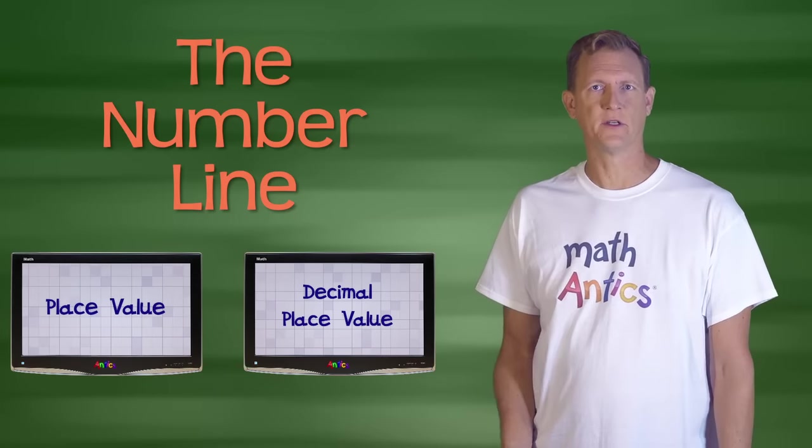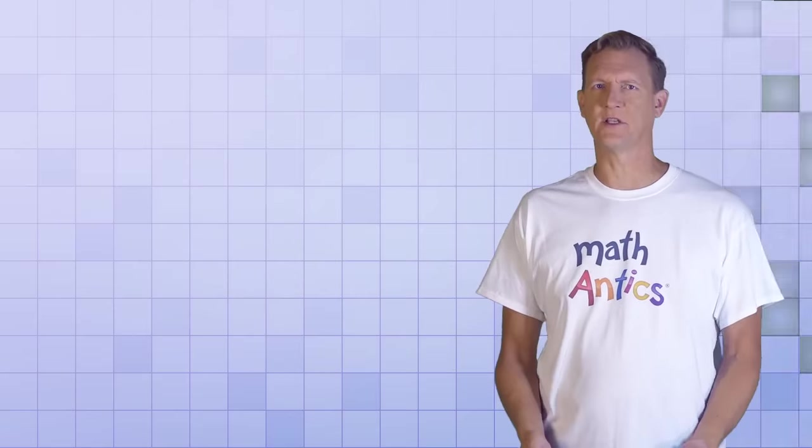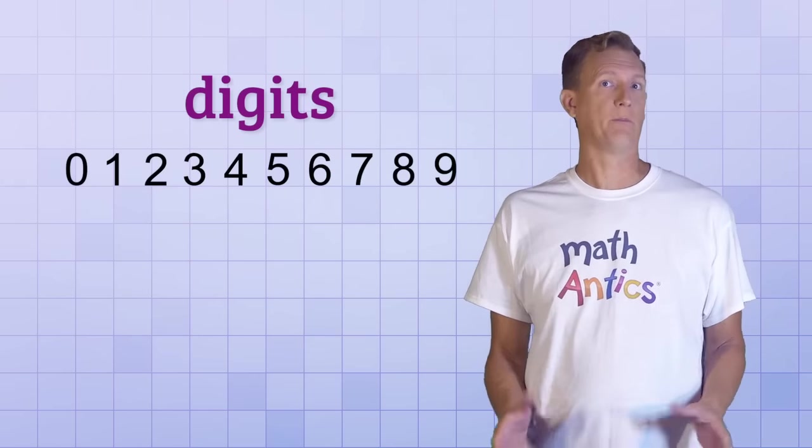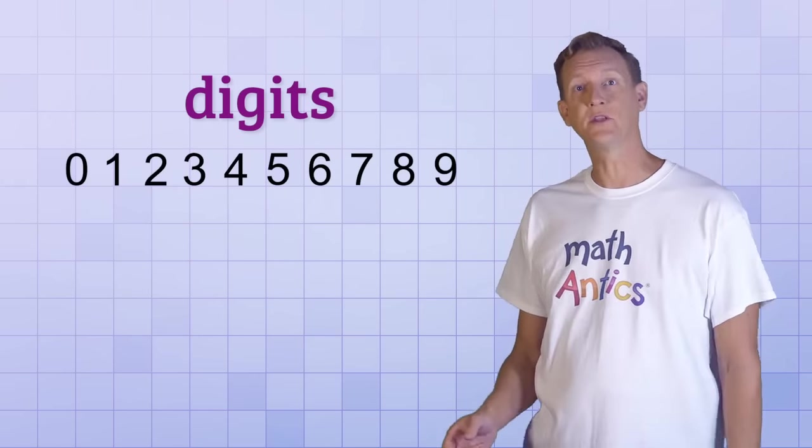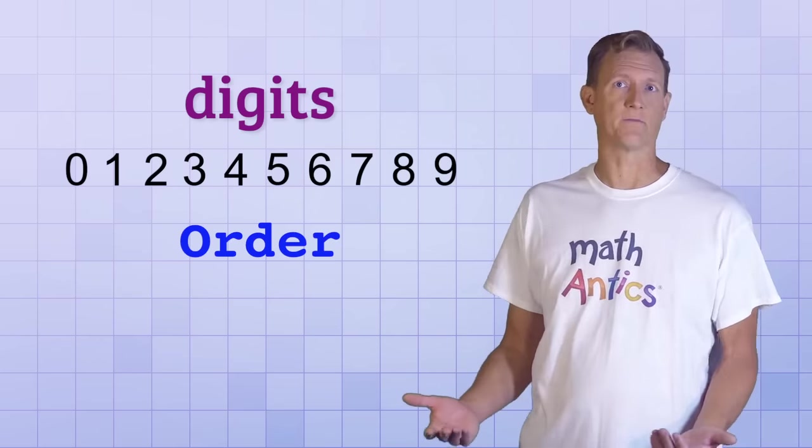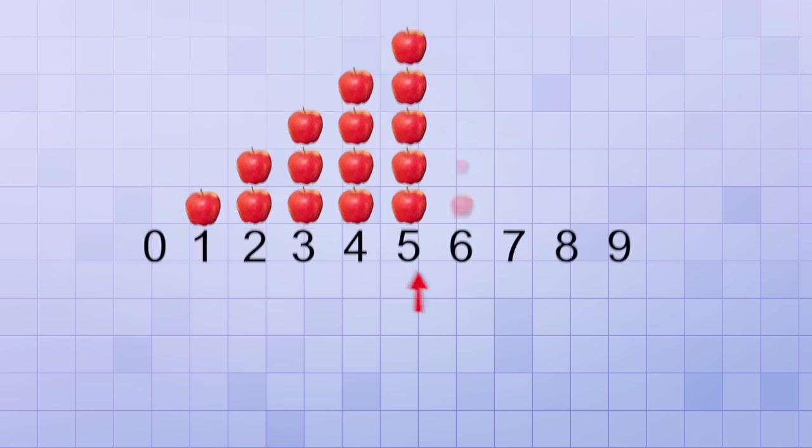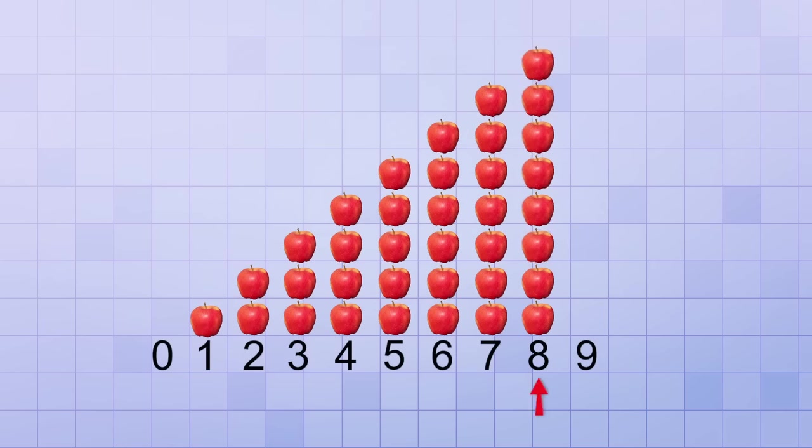In the Place Value videos, you learned that our Base 10 Number System uses 10 different digits to express any number. But we didn't just use those digits randomly. We used them in a specific order for counting. We started with 0, which represents the idea of having nothing, and then the next digit we used was 1, which represented a single apple in our example. Then, if we got another apple, we used the digit 2, then another 3, then 4, 5, 6, 7, 8, and finally 9, which is the last of our 10 digits.